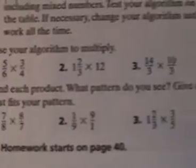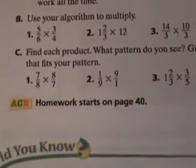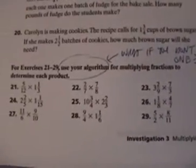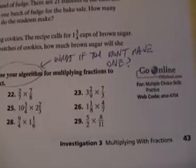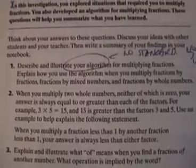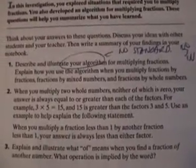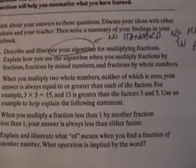Then you get to multiply these things and find each product. What pattern do you see? Give another example that fits your pattern. The pattern is just multiply the tops and multiply the bottoms — but it doesn't say that here. The parent letter says multiply tops and bottoms, but no method is here. Use your algorithm for multiplying fractions to determine each product — but what if you don't have one? Here's the reflections: describe and illustrate your algorithm for multiplying fractions. Explain how to use it to multiply fractions by fractions, fractions by mixed numbers, and fractions by whole numbers.